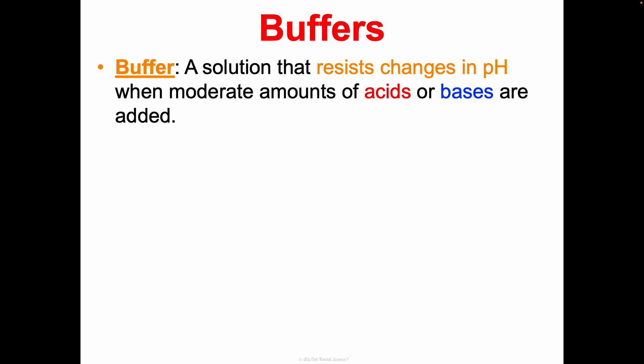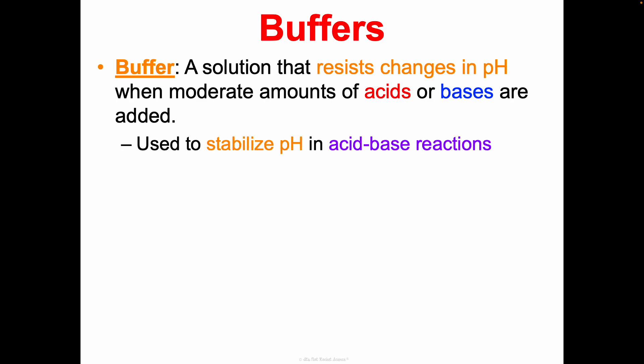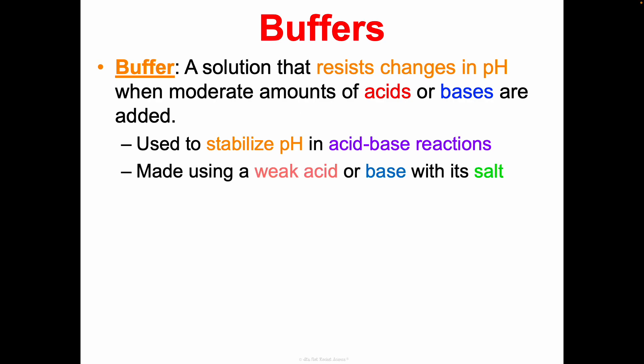Now let's talk about buffers, because this is a really important application for acid and base reactions. A buffer is a solution that resists changes in pH when moderate amounts of acids or bases are added. It stabilizes the pH — it won't keep it at exactly, say, pH 6, but it will keep it within a range like 5.5 to 6.5. Buffers are extremely important biologically — blood is the most common example.